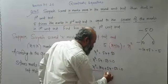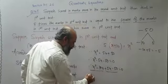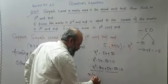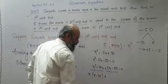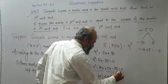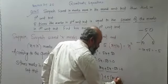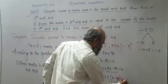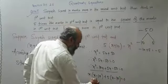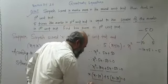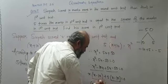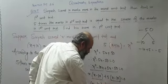Now make two pairs. In the first pair, x is common, so we write x(x minus 10). In the second pair, plus 5 is common, so we write 5(x minus 10). Now x minus 10 is common, so take x minus 10 as common. In the next bracket we get x plus 5, giving (x minus 10)(x plus 5) equals 0.